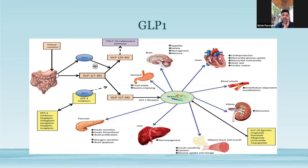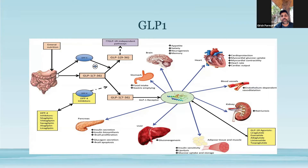At the level of the brain, GLP-1 decreases appetite, it improves satiety, and thereby causes weight loss. This is definitely going to be beneficial because you're going to treat the root cause of obesity, which is the root cause of diabetes. At the level of the heart, GLP-1 is cardioprotective — it improves cardiac output and myocardial contractility. There is a mild increase in heart rate, which is one of the flip sides of GLP-1 molecules. At the level of the vascular tree, it improves endothelial dysfunction and improves endothelium vasodilatation, which is very important in patients with diabetes. At the level of the adipose tissue, GLP-1 enhances lipolysis and causes weight loss.